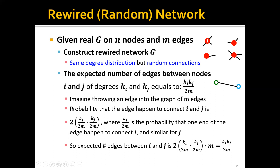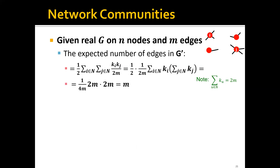Therefore, in the end, the expected number of edges between i and j is k_i times k_j over 2m. We can double-check that with this expected number of edges between i and j, it recovers the original expected number of edges. For a real graph G on n nodes and m edges, the expected number of edges in the rewired random graph G' is still m, the same as in the original graph.